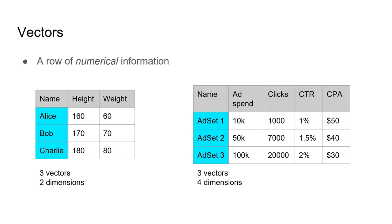In each of the tables we have three vectors: an Alice vector, a Bob vector, and a Charlie vector; and in the other, Ad Set one, two, and three. A vector is a row of numerical information. This table has two dimensions — dimension one and dimension two. The other table has four dimensions. If you're confused, just think about a dimension as a column in a table.